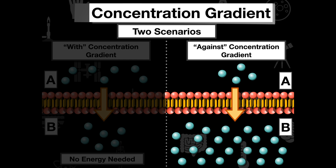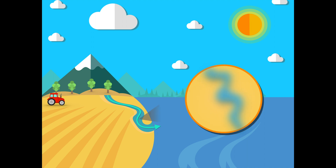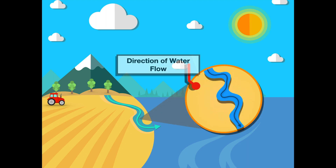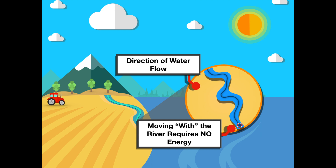Let's look at this analogy to understand moving with and against the concentration gradient in more detail. If we think about concentration gradient like a river — a river flows in one direction. We can think of the direction of water flow as analogous to the concentration gradient, or the direction in which the particles move. Moving with the concentration gradient is like moving with the river — it requires no energy.